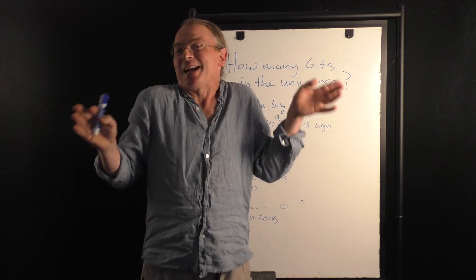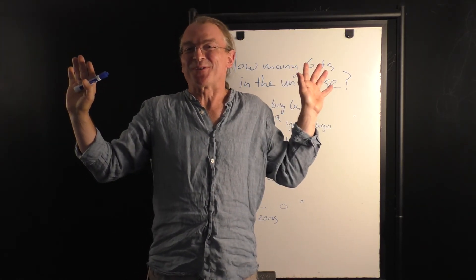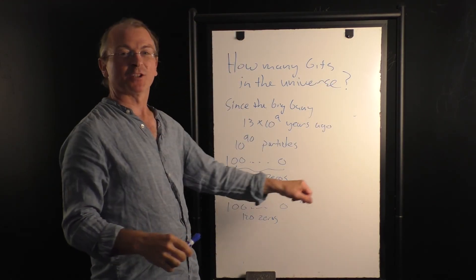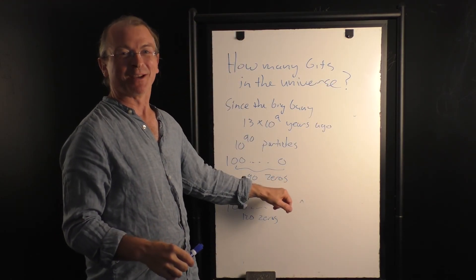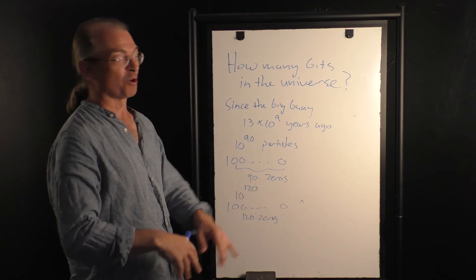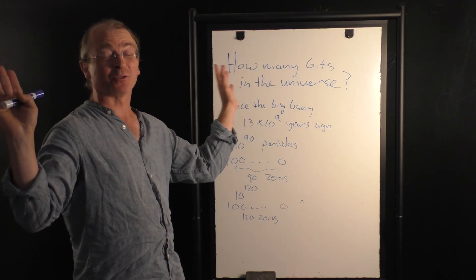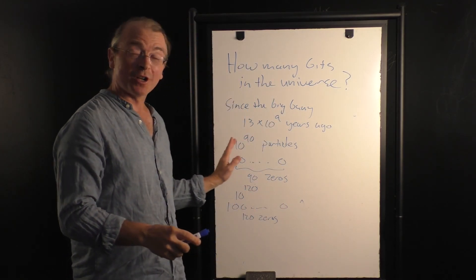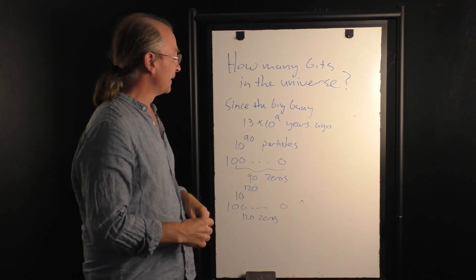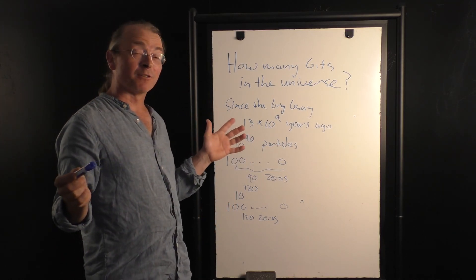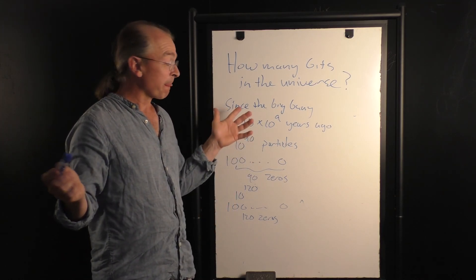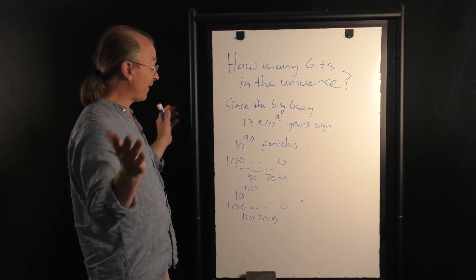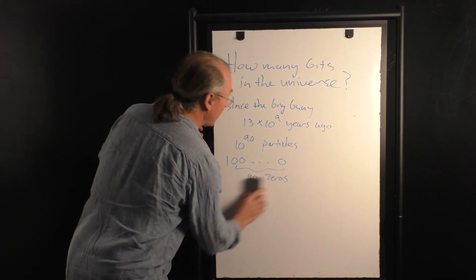These are large numbers of bits, but they're not infinite. I could think of much bigger numbers — for instance, 10 to the 120 plus 1 is bigger than 10 to the 120, or 10 to the 220, or 10 to the 240. They're large numbers, but there's a finite number of bits — a large number, but finite. Now what does this mean?